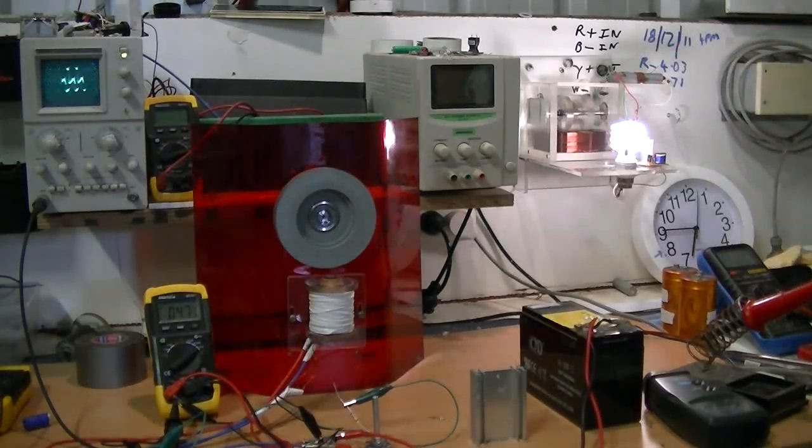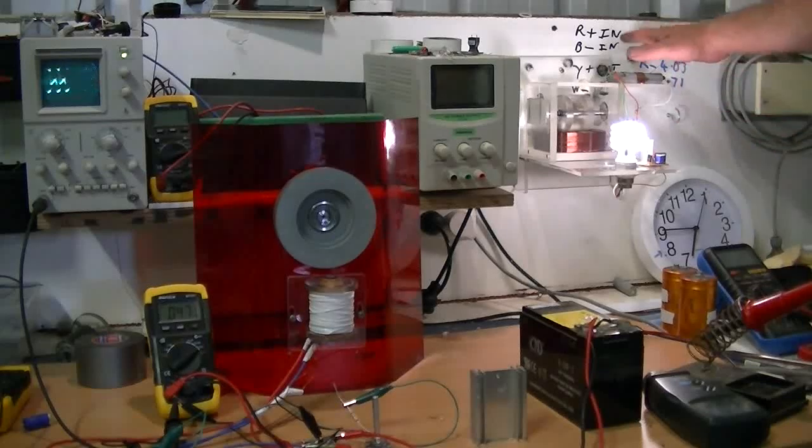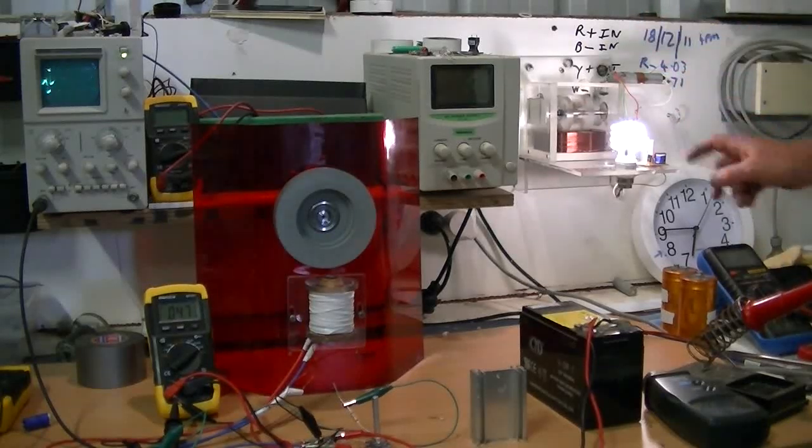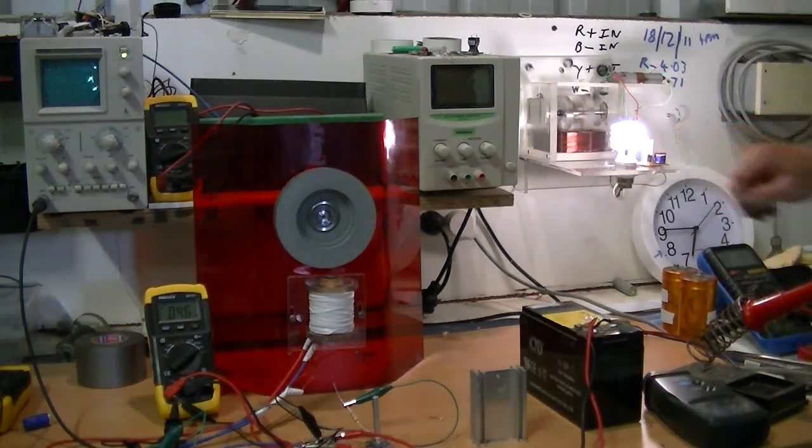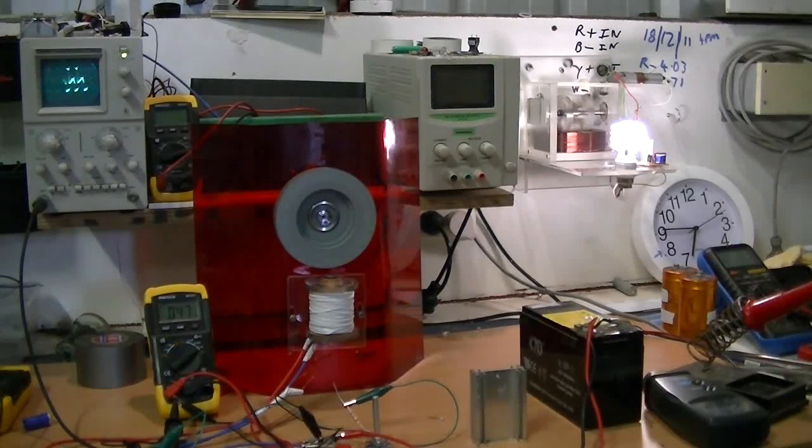And I've probably run that light about 20 minutes so far on the charge battery. So it's not done too bad. It's falling down, but it's keeping that charged and running our light every now and then. We'll leave it running and see how many days we can get out of it.